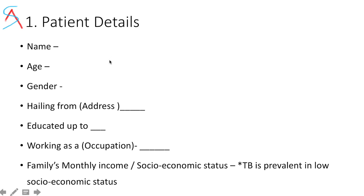First we have to start with patient details. We will ask the name, which is the identity of the patient. Then we ask the age — in old age, malignancy would be common. Then gender: males are prone to X-linked recessive disease, females to autoimmune disease. Then ask the address, as certain places are endemic for certain diseases. Ask education, occupation, and socioeconomic status — TB is prevalent in low socioeconomic status in India.